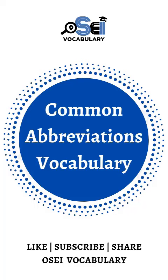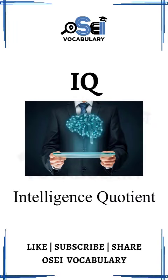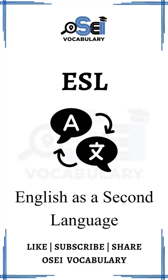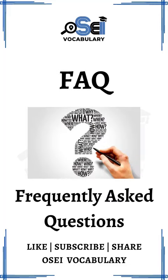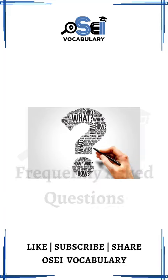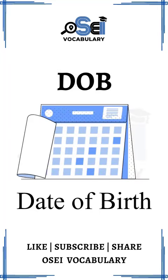Common Abbreviations Vocabulary. IQ stands for Intelligence Quotient. ESL stands for English as a Second Language. FAQ stands for Frequently Asked Questions. DOB stands for Date of Birth.